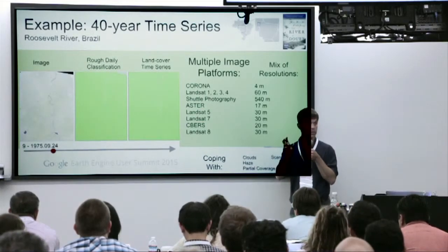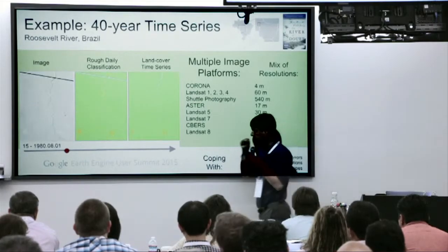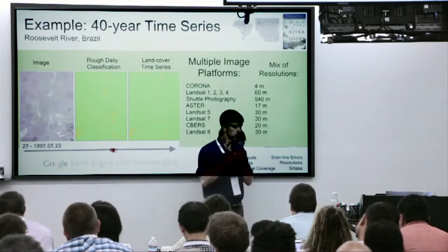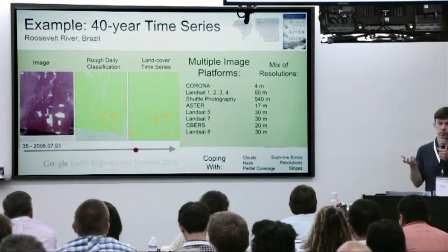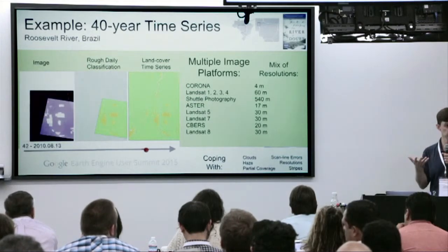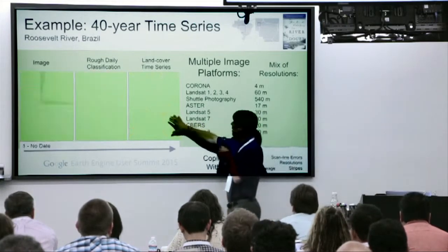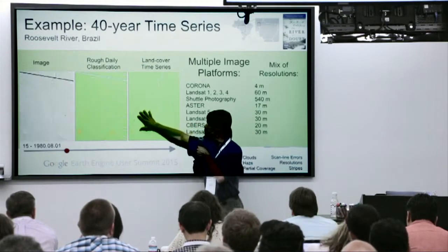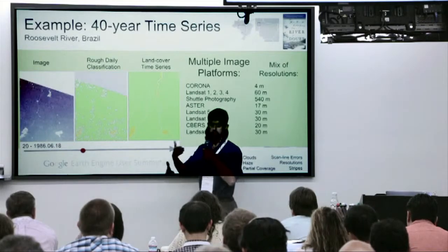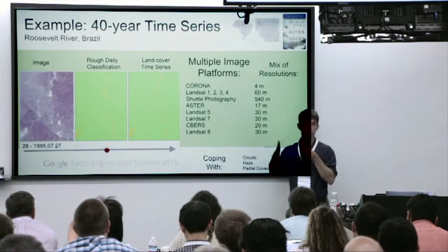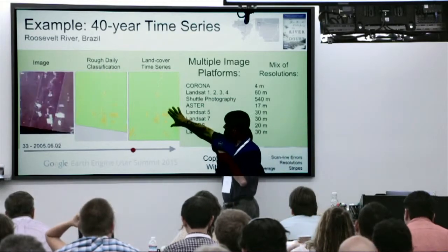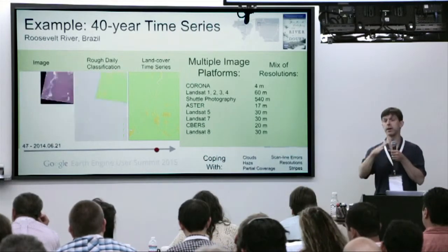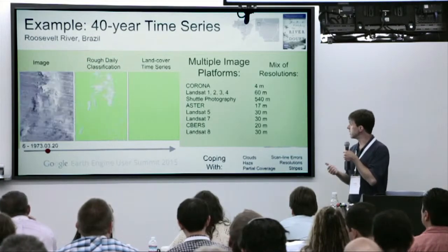Instead, what we do is produce this rough daily classification that you can see in the second panel, including the scan lines that drop out and the clouds where they exist. We know they're roughly good classifications but not perfect — and of course none of our classifications, even with tremendous effort, are perfect. What you see on the right is this gradually changing land cover time series, which holds all information from each image plus the compilation from all previous images. You can see areas that were deforested, then reforested, then deforested again.